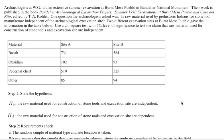One question the archaeologist asked was, is raw material used by prehistoric Indians for stone tool manufacturing independent of the archaeological site excavation? The two different excavation sites at Burnt Mesa Pueblo gave the information in the table below, and they would like us to use a chi-squared test with a 5% level of significance to test the claim that the raw material used for construction of stone tools and excavation sites are independent.